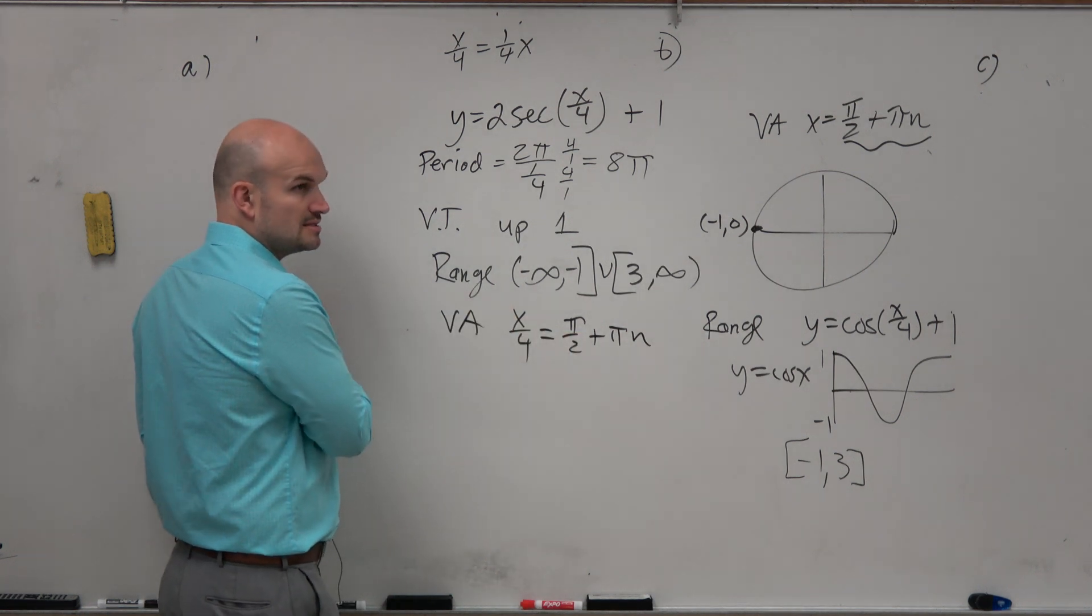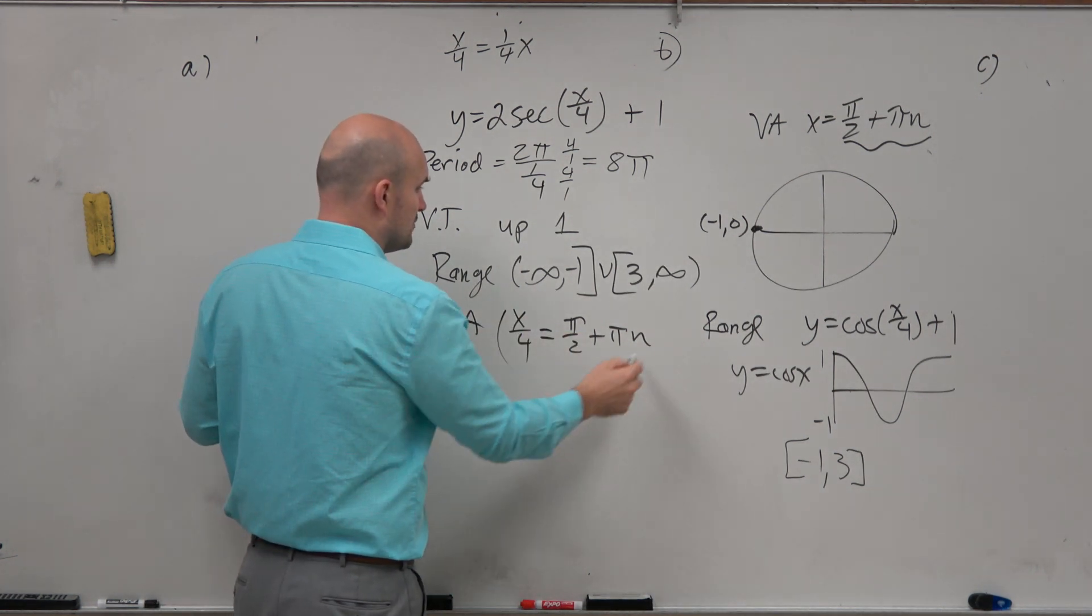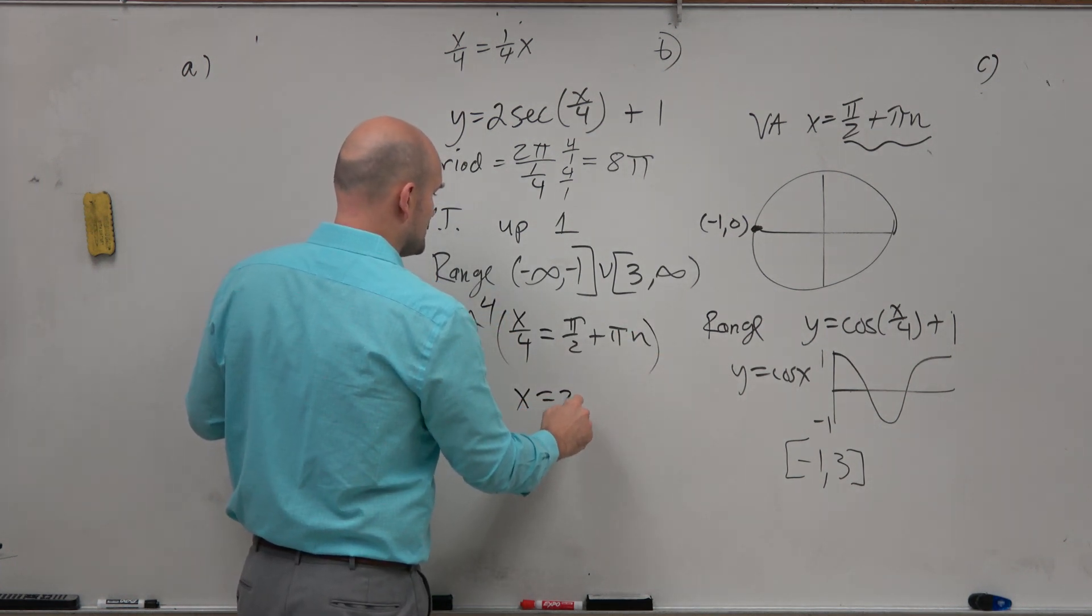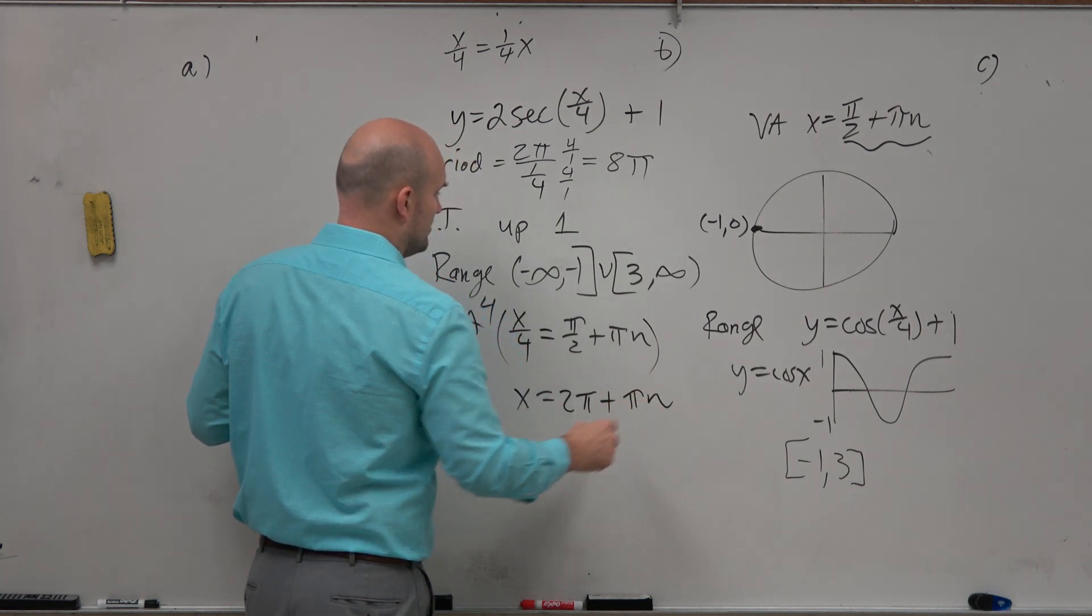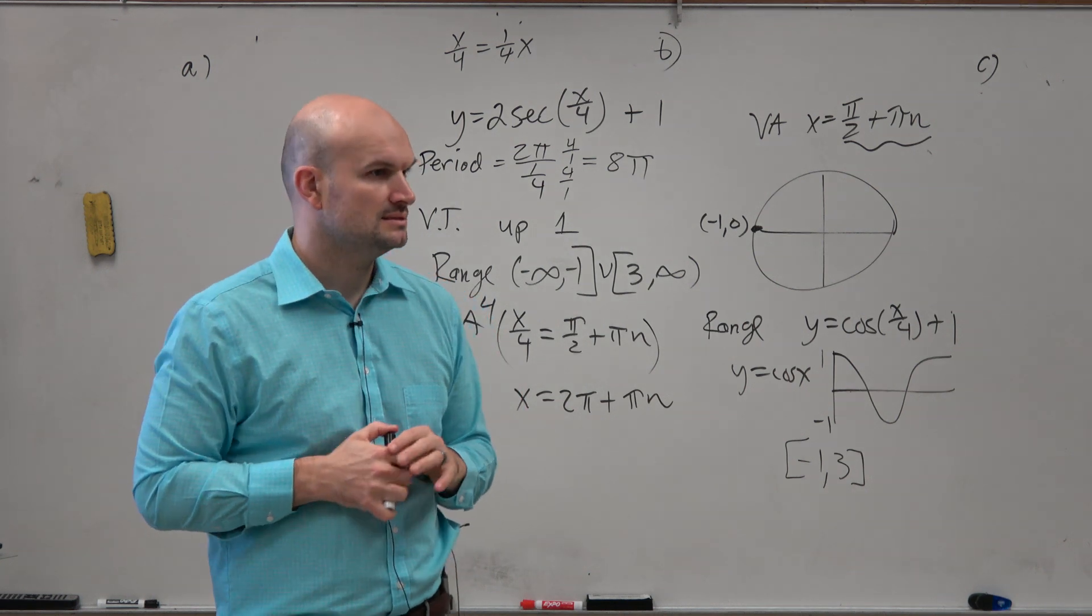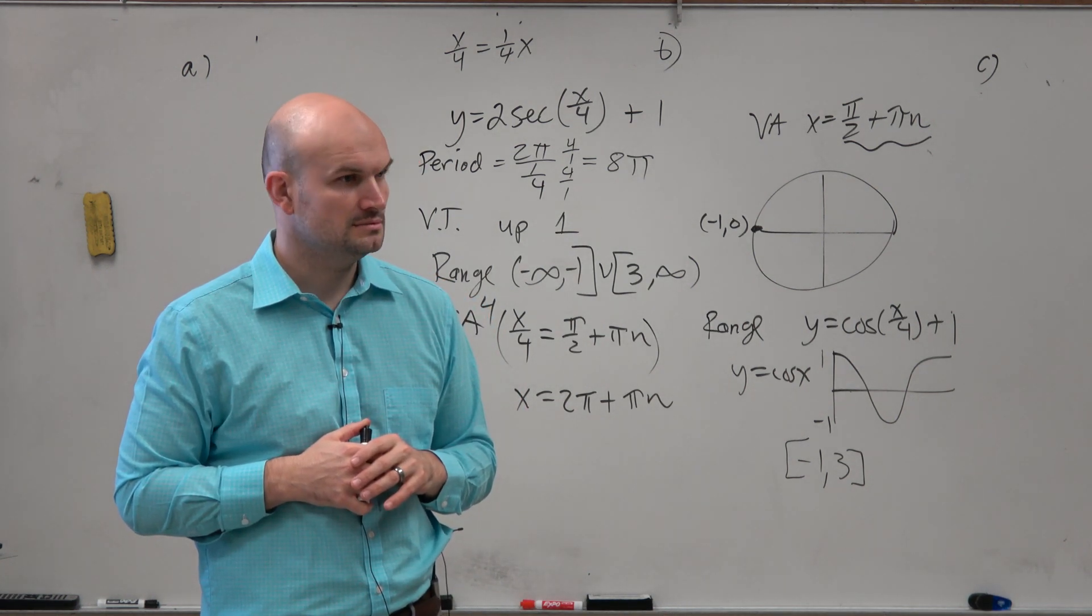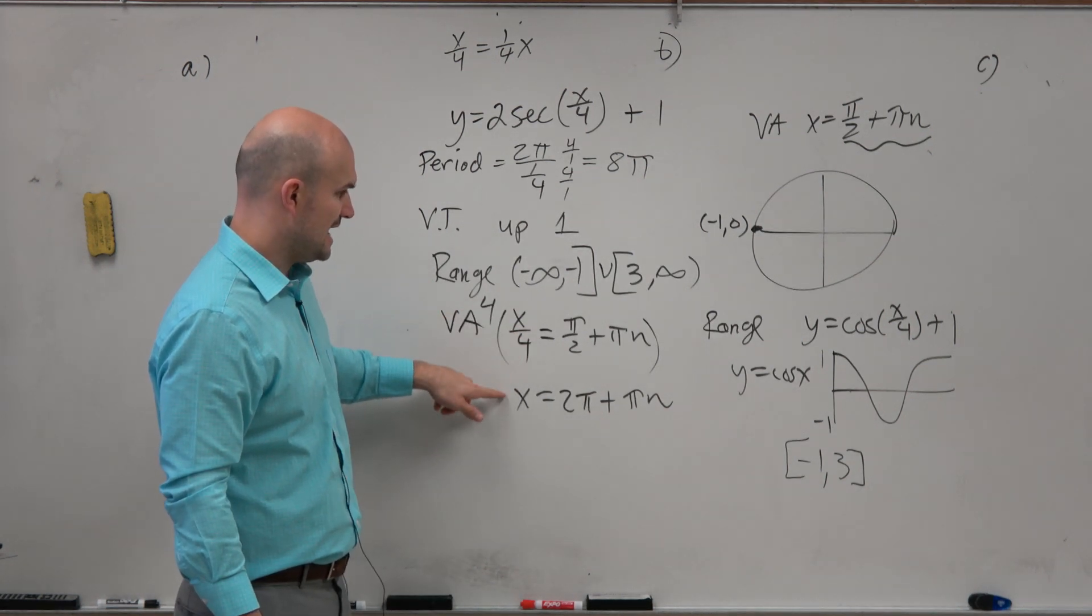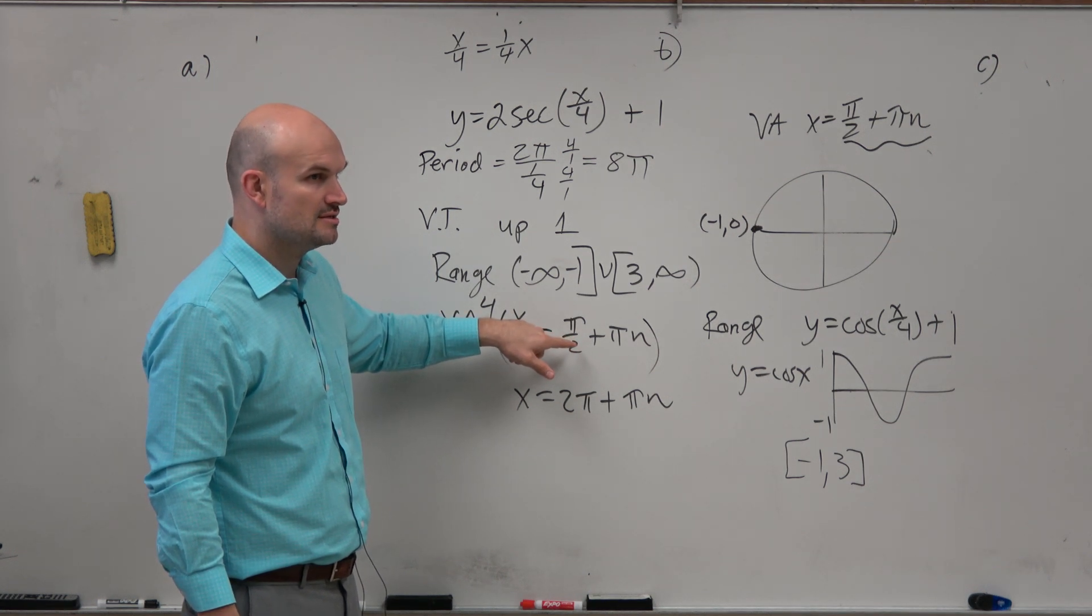Now, how do we solve for x? Well, x is being divided by 4. So if we want to undo divided by 4, we're just going to simply multiply by 4. So x equals 2 pi plus pi n. Yeah, no? What happens when you multiply 4 times x over 4? You get x. It's 4 times pi halves is 4 pi over 2, which is 2 pi.